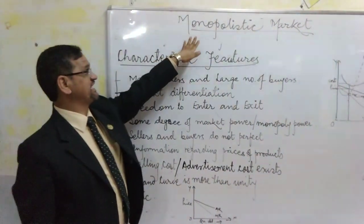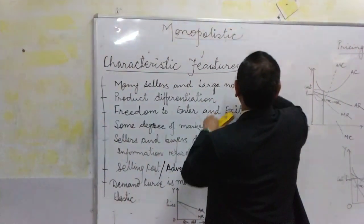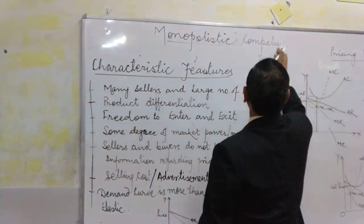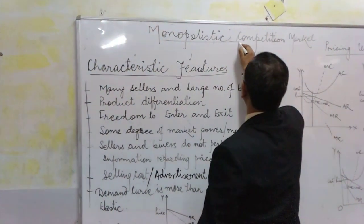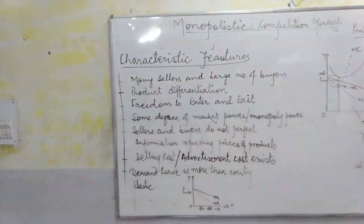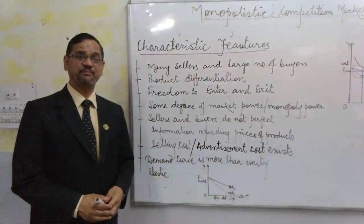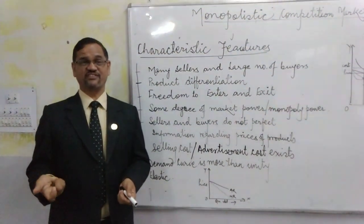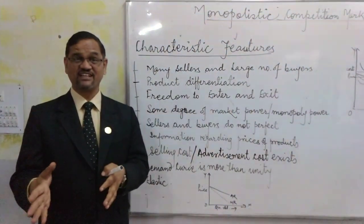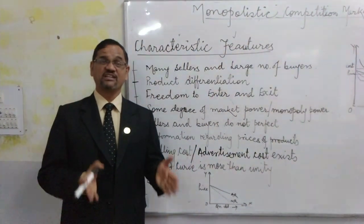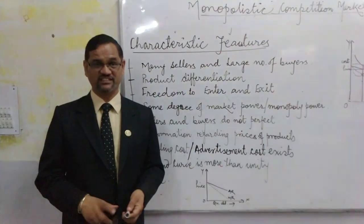The second topic today is monopolistic competition market. This is the most realistic market, in which we have many sellers and a large number of buyers. These many sellers also have product differentiation. Product differentiation means the products are slightly different from each other — they are close substitutes. For example, soaps: Lux, Hamam, Dove, and many other brands. They are not a replica of each other. Product differentiation means the same uses of the product but different brands and different ingredients.